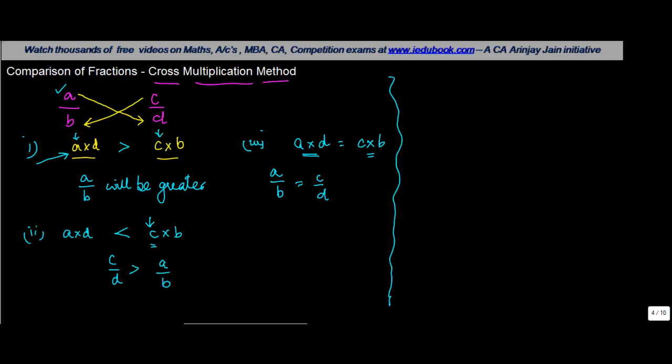Now, I'll take one example each where I will prove this to you. So let's say you have 6 upon 11 and you have 7 upon 14. So let's do the cross multiplication. So we get 6 into 14 and we'll get 7 into 11.